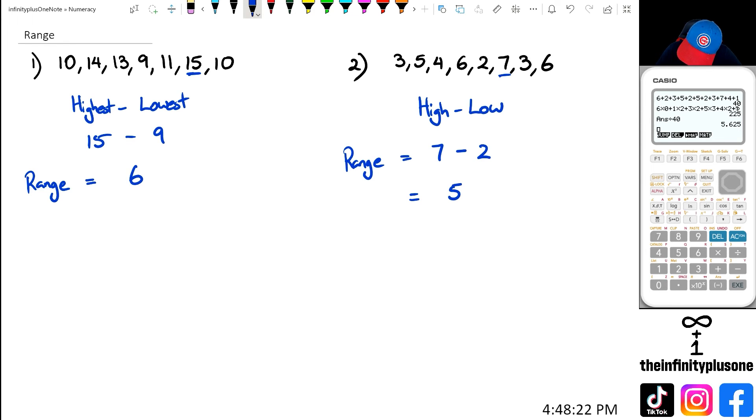So we've got 7 take away 2, which gives me 5, and that pretty much covers what range is for a set of data.